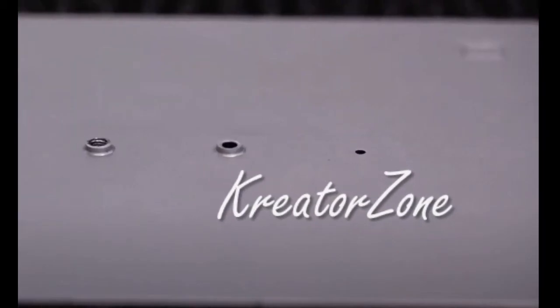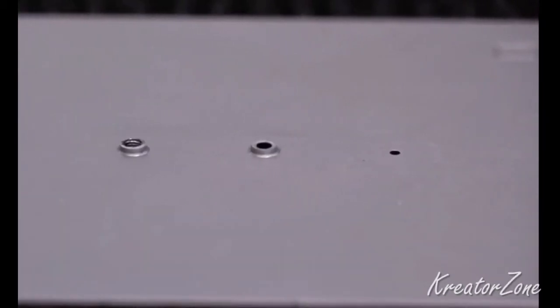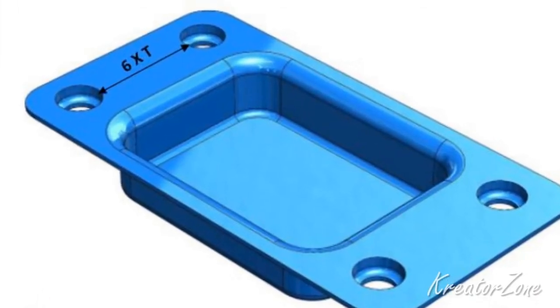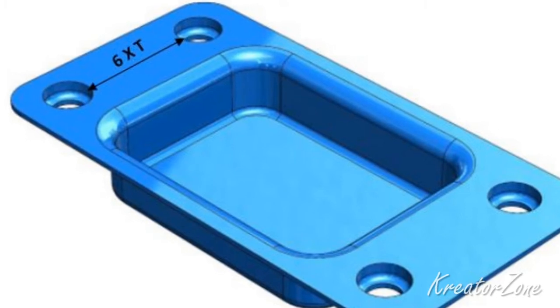It is important to maintain distance between two extruded holes in sheet metal designs. If extruded holes are too close, it can lead to metal deformation. It is recommended that the minimum distance between two extruded holes should be six times the thickness of sheet metal.